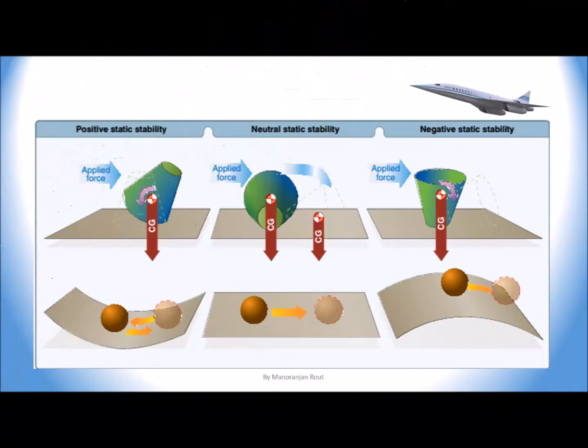The first image on the left side shows positive static stability, in which the disturbance is stabilized by returning to its original state. The second image in the middle shows neutral static stability, in which the disturbance neither increases further but remains in its original state in the direction of disturbance. The last image on the right side shows negative static stability, in which the disturbance increases in the direction of disturbance.